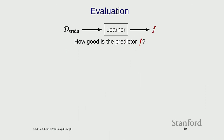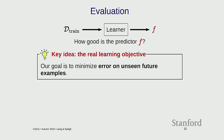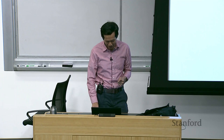Let's formalize this. How do we assess whether a predictor is good? Because if we can't measure it, we can't optimize it. The key idea is that we really care about error on unseen future examples. This is a great aspiration, but the question is how do we actually optimize this — it's the future and it's unseen. By definition, we can't get a direct handle on this.